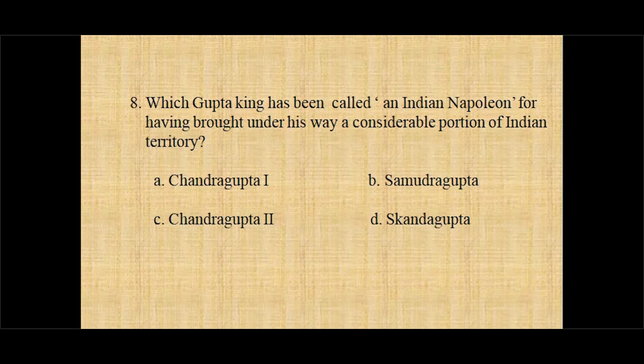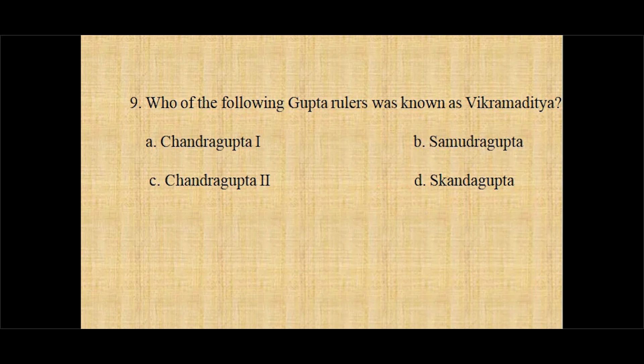Question number eight: Which Gupta king has been called the Indian Napoleon for having brought under his sway a considerable portion of Indian territory? Option A Chandragupta I, option B Samudragupta, option C Chandragupta II, option D Skandagupta.